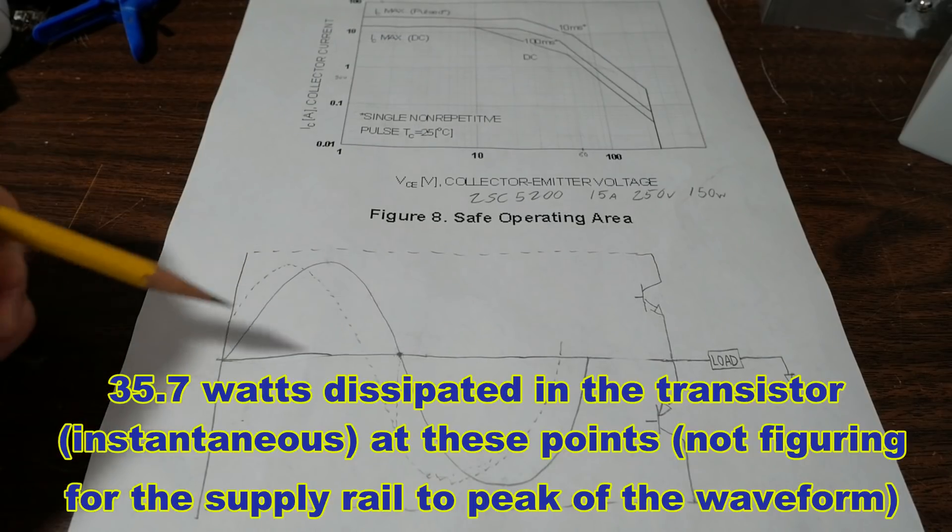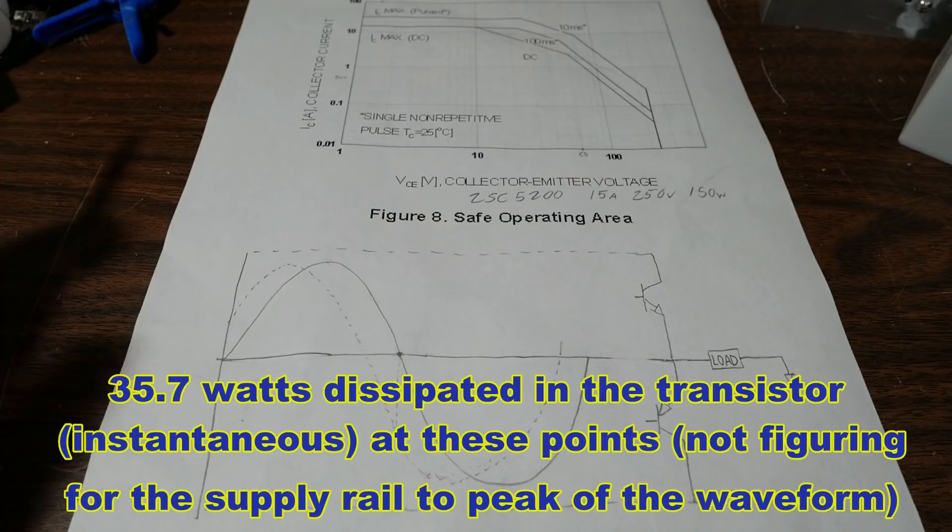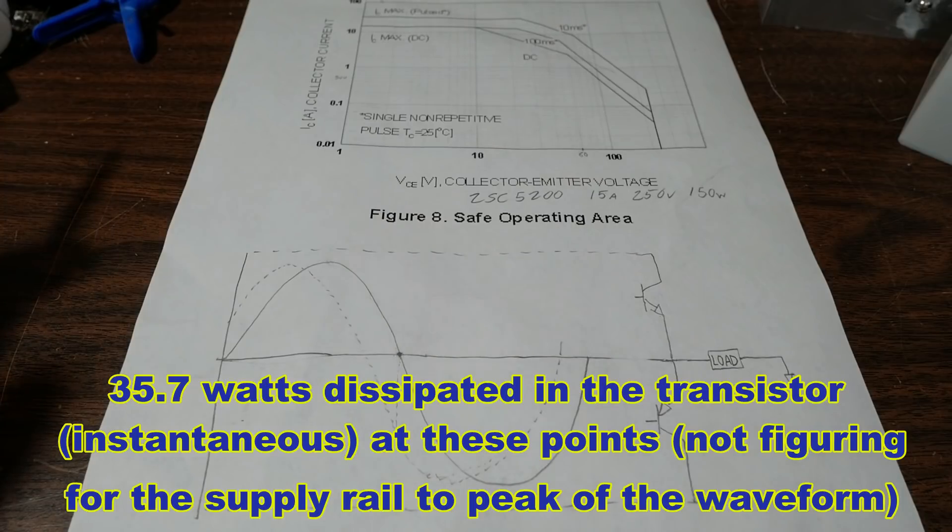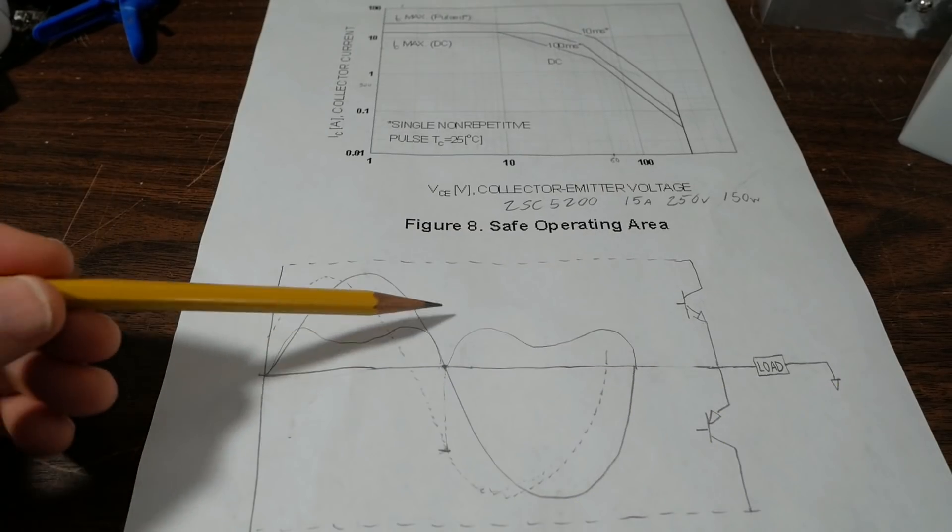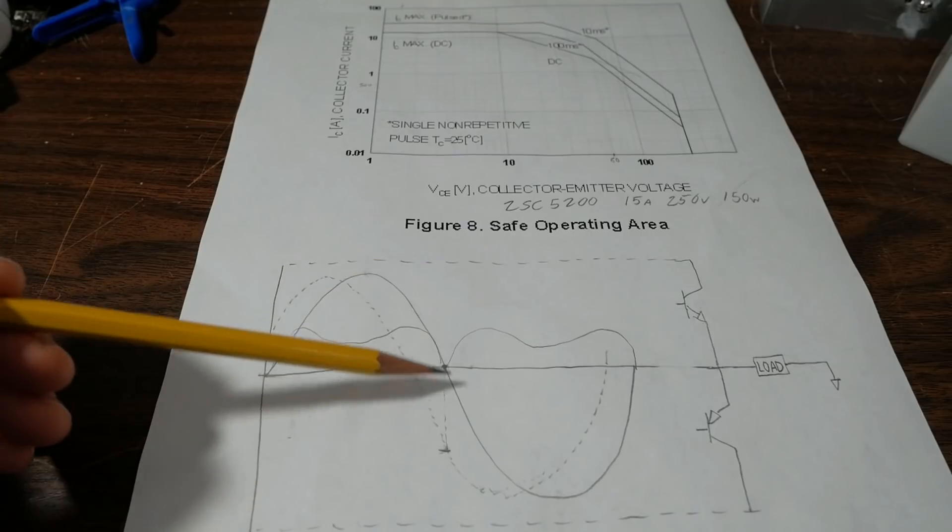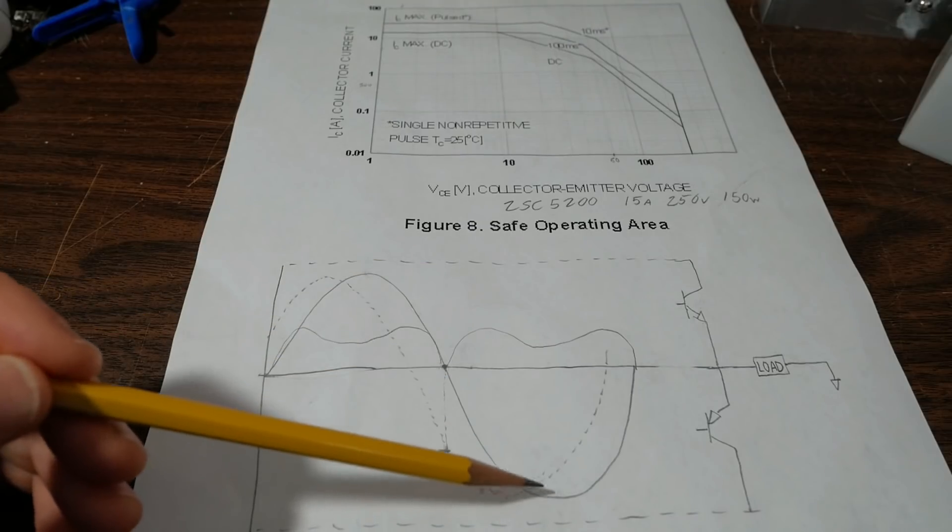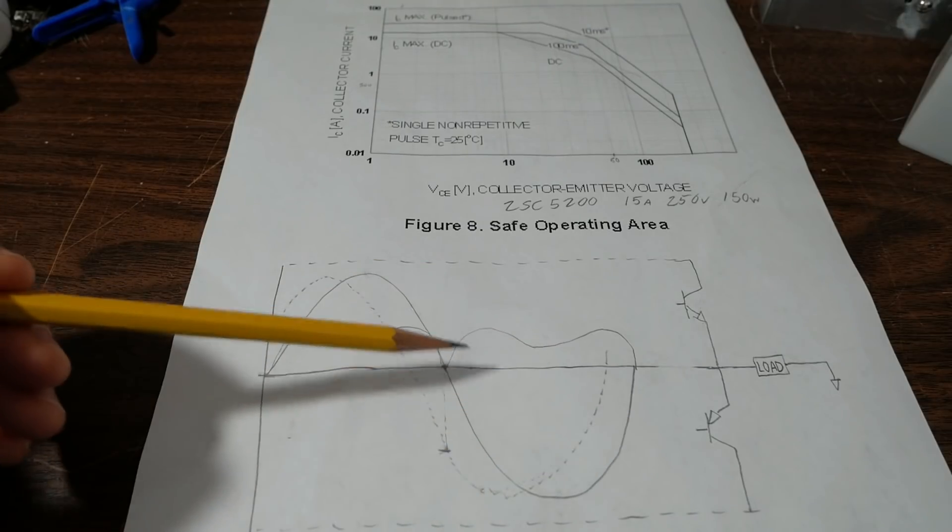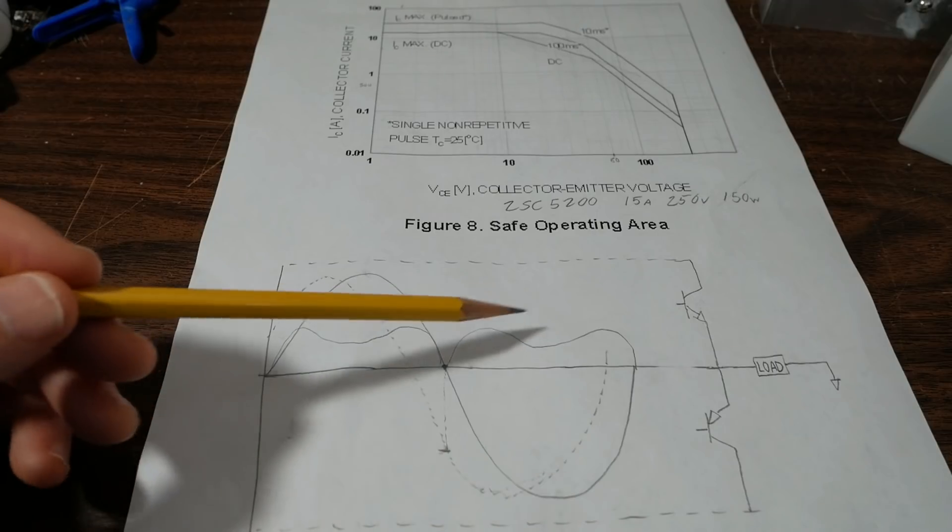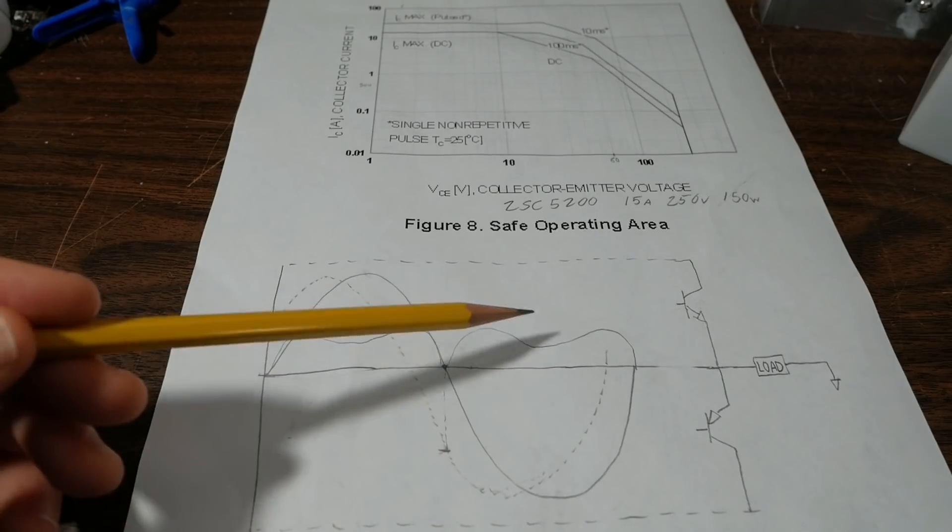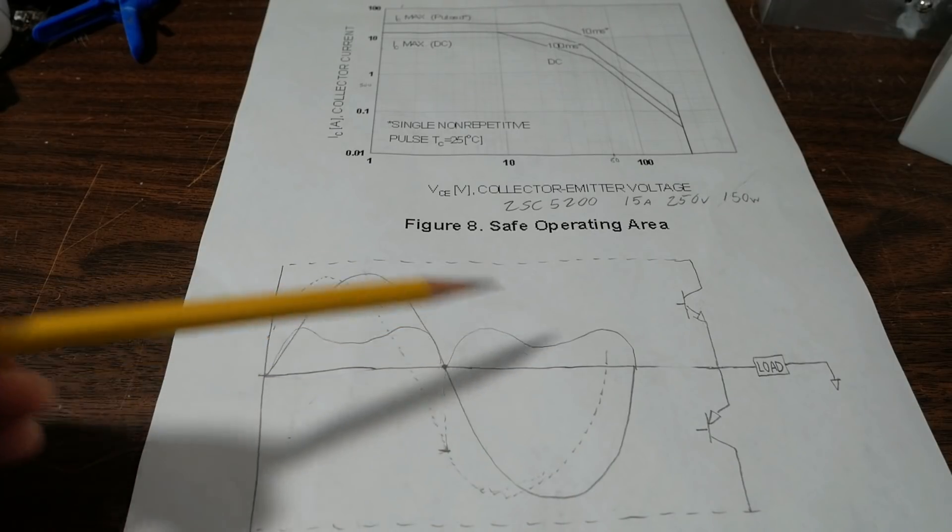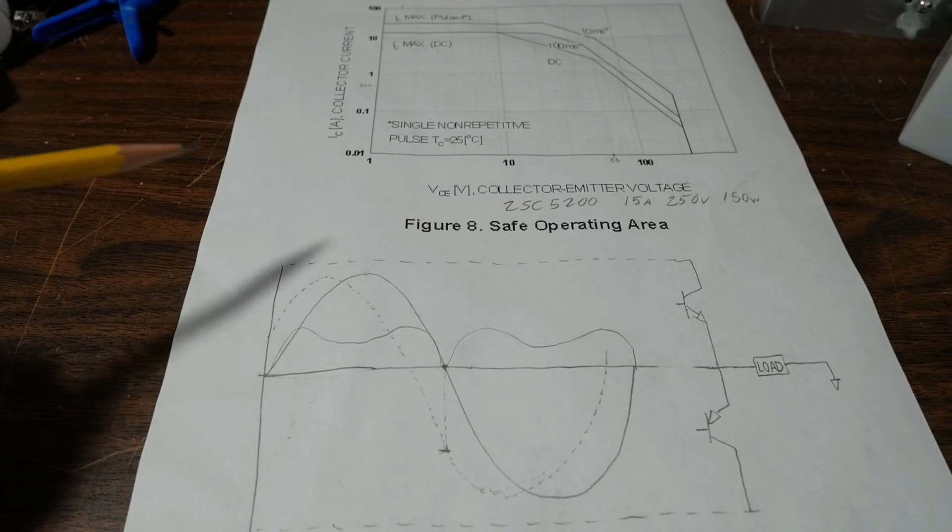So we end up with a kind of an odd looking instantaneous power dissipation with the transistors. So I drew that in here. And of course that would be the same on the negative side because negative current, negative voltage is the same. Now, not to confuse you, this is for a resistive load. Now, a reactive load is a totally different story.